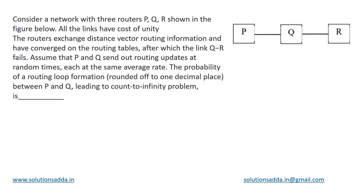This is a networks question on routing. We have been given a network with three routers P, Q, and R as shown in this figure. All links have a cost of unity, which means one. The routers exchange distance vector routing information and have converged on their routing tables — we are following DVR routing in this case. All routers have exchanged their distance vectors and the system is in a stable state.